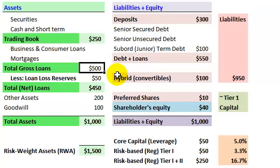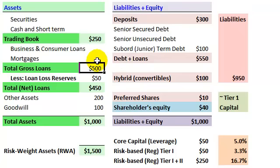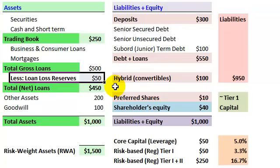In my example, total gross loans is $500. An important line item here is loan loss reserves. The bank has $500 in credit extended to customers; however, that's a credit portfolio from which the bank does not expect all loans to be 100% repaid. It does expect some defaults. These are expected losses — the expected losses are priced into the yield of those loans, and they are provisioned for as loan loss reserves.